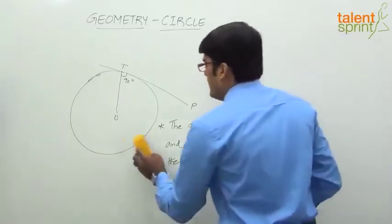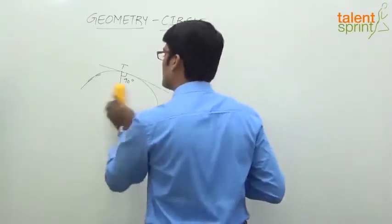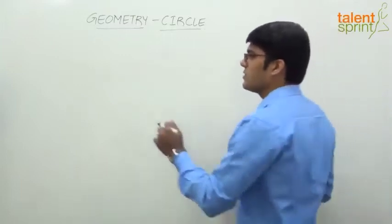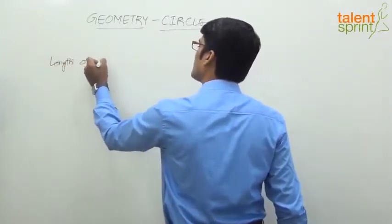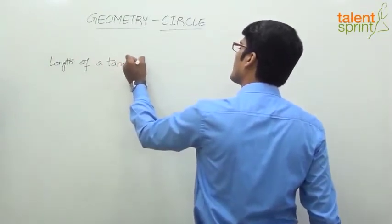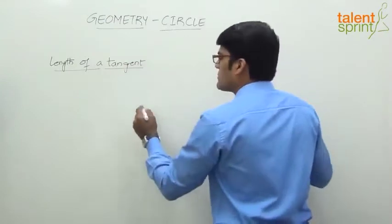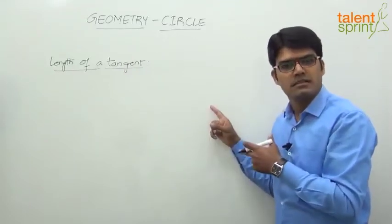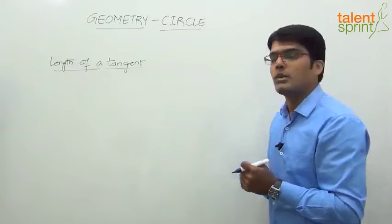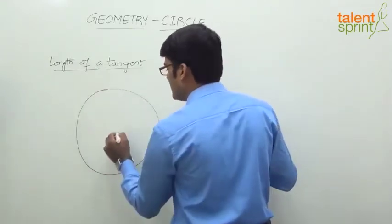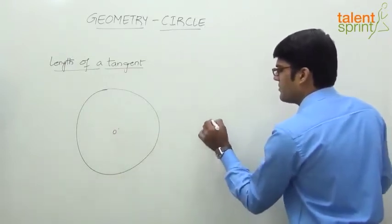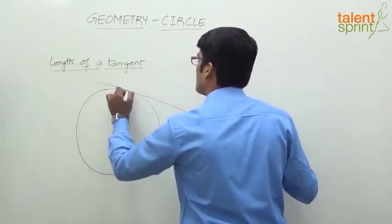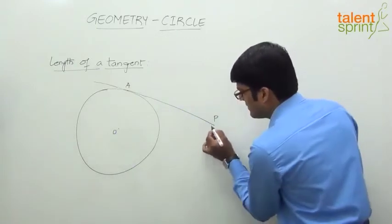The next point is about the length of a tangent. If we draw two tangents from an external point to a circle, the length of both those tangents would be equal. Let us say this is the circle with center O, and from the external point P we draw two tangents — one touching the circle at point A towards the top, and another towards the bottom of the circle.